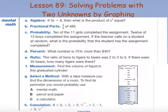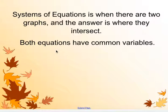Course 3, Lesson 89. We are solving problems with two unknowns by graphing. This is called a system of equations, where when we graph two lines and where they intersect, that is our answer — that is our solution. The solution to a system of equations is where two lines intersect, because both equations have common variables. Oftentimes these are x and y, like our graph on a plane.